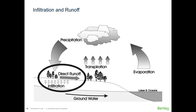Here we are looking at the hydrologic cycle. Rainfall-runoff modeling primarily deals with the precipitation, which could be rain or snow, the infiltration of some of that water, and what is left is direct runoff.